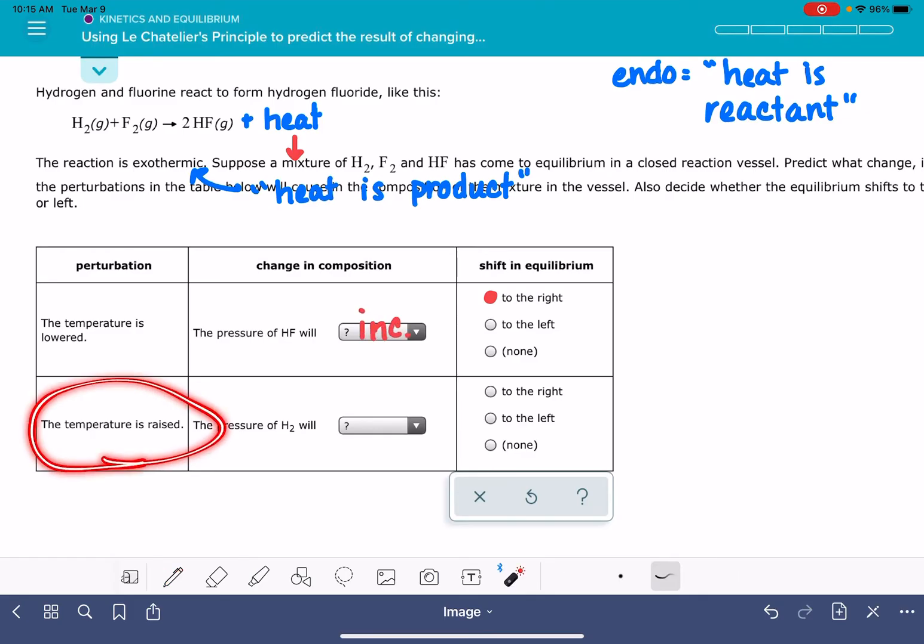What about if the temperature is raised? If the temperature is raised, we want to think about that as if we are adding heat. If we add anything to the right-hand side of the reaction, the position of equilibrium shifts away from whatever we've added.